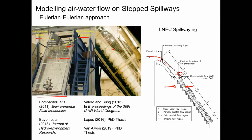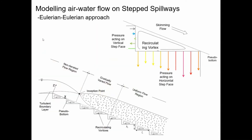On a step spillway, you get almost laminar flow coming over the top with a clear surface. Then at some point you get an inception point where air starts getting entrained into the flow and you get white water. In each step cavity you also get recirculating vortices, which affect the pressures on the step — important because that could result in plucking of masonry steps or cavitation if you get low pressures.